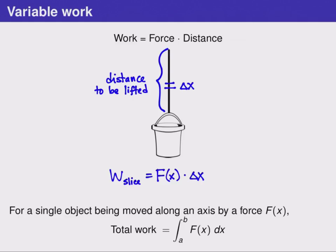That results in this result below. For a single object, such as a bucket of water, being moved along an axis, by a force that we'll call f, the total work required to lift that object is the integral from a to b of the force function with respect to x. Here a and b represent the lowest and highest points of our distance. So in our picture, we would go from a up to b. Again, we've sliced something into very thin pieces, calculated a quantity we're interested in with that piece, and then used an integral to total that up and get an exact value.